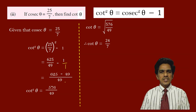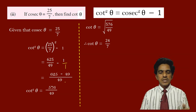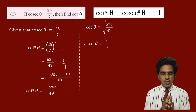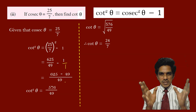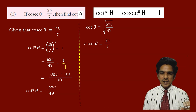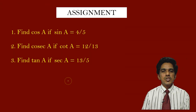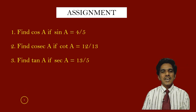So we have found out the three trigonometric identities. You can find one trigonometric ratio using these identities when given another ratio. This is your assignment for today — solve these three questions and post your answers as early as possible. Thank you.